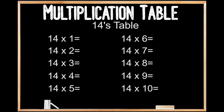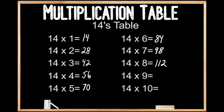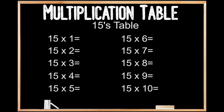14's table. 14 times 1 is 14. 14 times 2 is 28. 14 times 3 is 42. 14 times 4 is 56. 14 times 5 is 70. 14 times 6 is 84. 14 times 7 is 98. 14 times 8 is 112. 14 times 9 is 126. And 14 times 10 is 140.